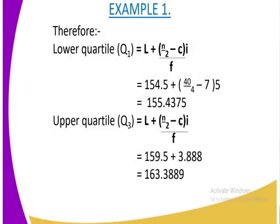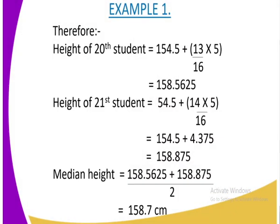So actually, this is what you are going to get, times 5 over 16. So eventually you are going to get 158.875. And you get the 20th and the 21st student, then you divide by 2.